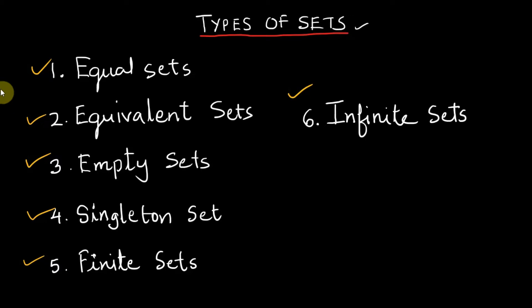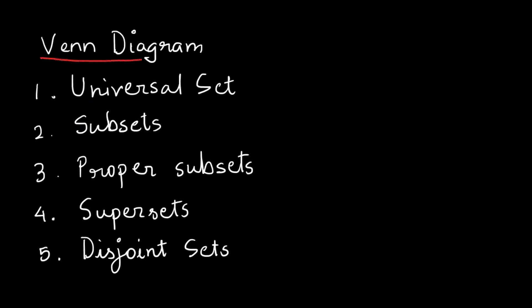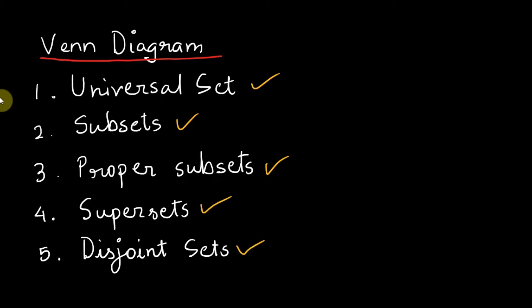After you have learned about Venn diagrams, I will talk about some more sets like universal set, subsets, proper subsets, supersets, and disjoint sets. These are sets derived from universal sets and we will discuss them in detail with examples after you have understood the concept of Venn diagrams.